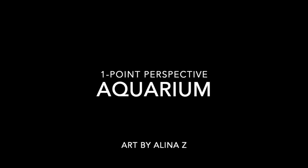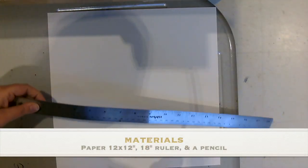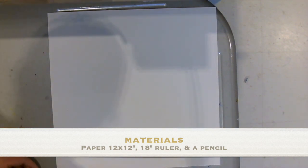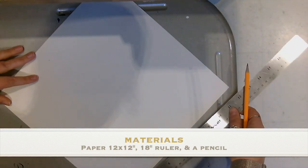We're going to create an aquarium drawing using one point perspective. You will need an 18 inch ruler if you are using a 12 by 12 inch paper and a pencil to start.